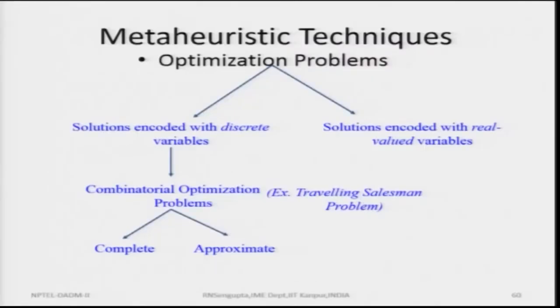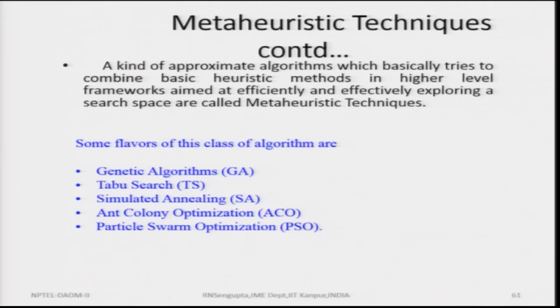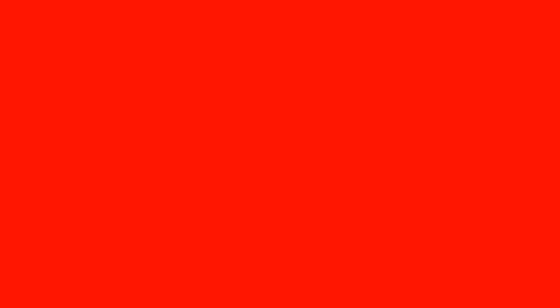That was a very brief discussion of ANN. Now I am going to utilize ANN in change point detection. Solutions can be encoded with discrete variables, and for optimization problems we can use complete or approximate solutions — in the case of approximate solutions we use heuristic methods. Meta-heuristic techniques are approximate algorithms that combine basic heuristic methods in a higher-level framework to find solutions efficiently. These include ant colony optimization, simulated annealing, artificial neural networks, genetic algorithms, particle swarm optimization, tabu search, and others.